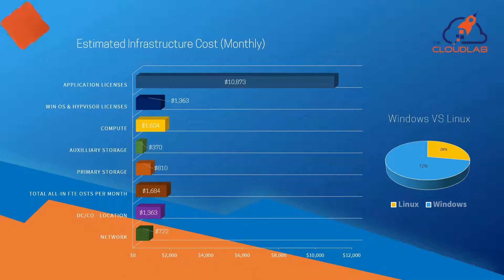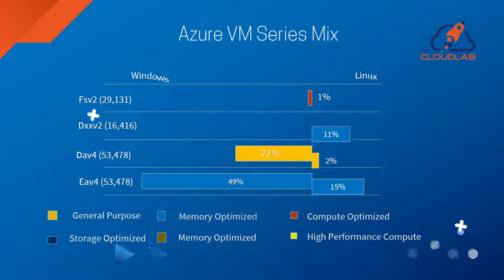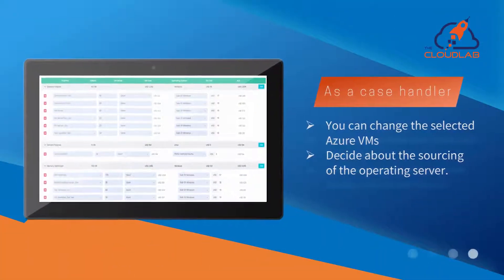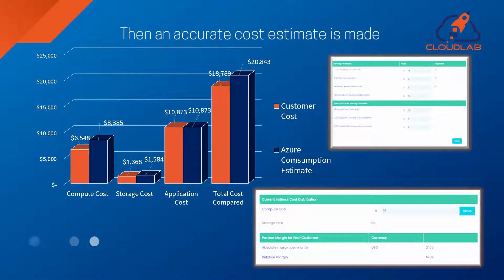The application estimates running costs based on benchmark data, and these estimates can be overwritten by real customer data. The Smart Azure Calculator then maps the existing VM configurations to appropriate Azure VM series based on gigabyte RAM core ratios in combination with workload purpose. As a case handler you can change the selected Azure VM series and decide about the sourcing of the operating system — and here you can save a lot of money. An accurate estimate is then made of the Azure cost to run the customer workloads on an equivalent Azure infrastructure in a so-called lift-and-shift scenario.